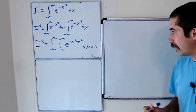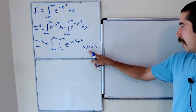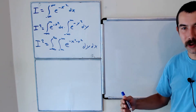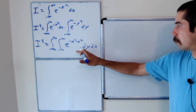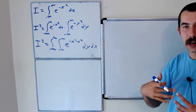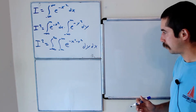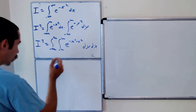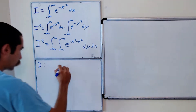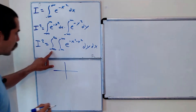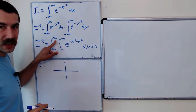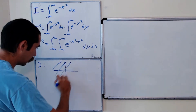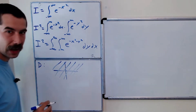Believe it or not, this is going to make the question a little bit easier. Instead of using Cartesian coordinates, we're going to switch to polar coordinates. Let's sketch the region that we're integrating over and express it in polar coordinates. The region — let's call it D — has x going from negative infinity to infinity, and y also going from negative infinity to infinity. That's the whole plane, so we're integrating over the whole xy-plane.